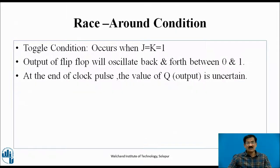The race-around condition: this toggle condition, when both J and K equal 1, causes the output of the flip-flop to oscillate back and forth between 0 and 1. So at the end of the clock pulse, the value of Q is uncertain.